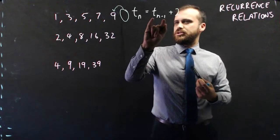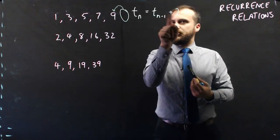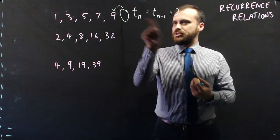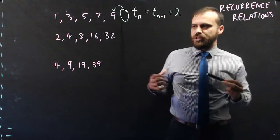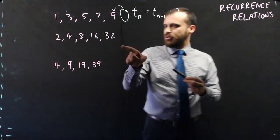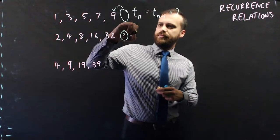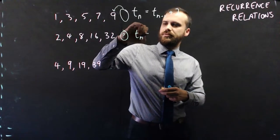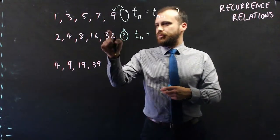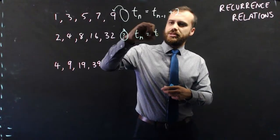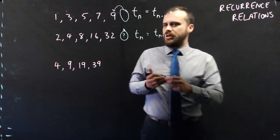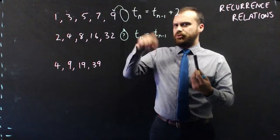As long as you know the previous term and you know what you need to do to it to make the next term, then you can use a recurrence relation. So looking at this formula, the next term tn is equal to the previous term tn-1. And what am I doing to each previous term?